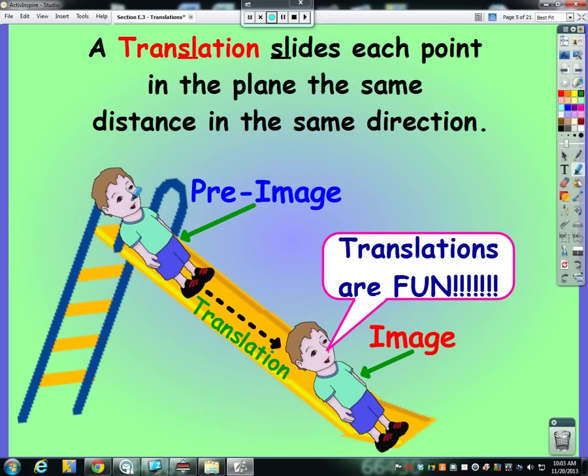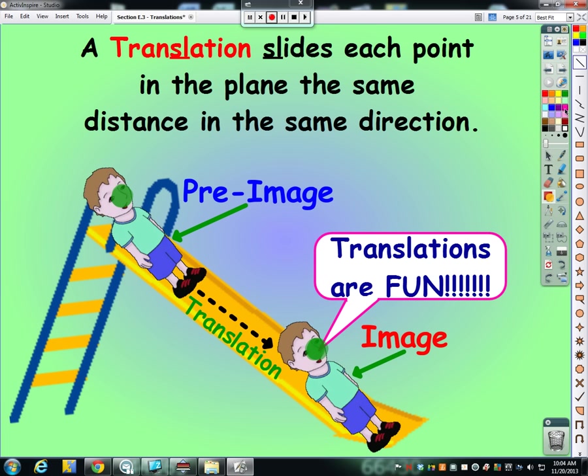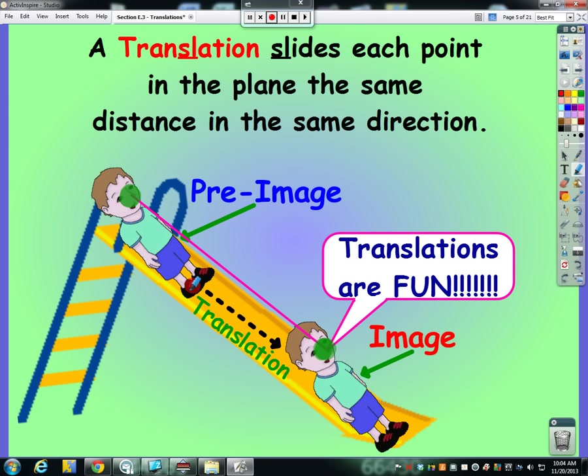Now the definition of a translation, which this part's on your notes, is that it slides each point in the plane the same distance in the same direction. So we could talk about Bobby here, his nose and the pre-image and image, and that distance between Bobby's pre-image nose and his image nose should be the same distance from Bobby's right foot pre-image to his right foot image.